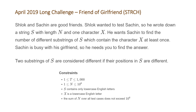The problem states: Schlock and Sashin are good friends. Schlock wants to test Sashin so he wrote down a string s with length n and one character x. He wants Sashin to find the number of different substrings of s which contain the character x at least once. Sashin is busy with his girlfriend so he needs you to find the answer. Two substrings of s are considered different if their positions in s are different.